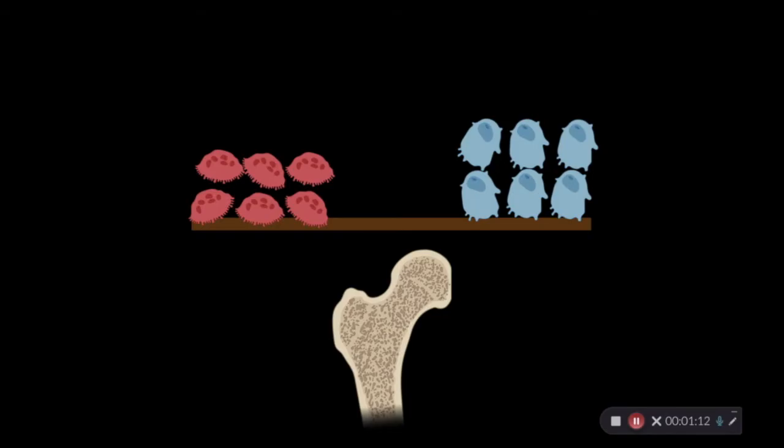Now, in healthy bone, there's a balance between bone formation and resorption, and between the activities of the osteoblasts, shown here in blue, and the osteoclasts, shown here in red. Changes in that balance do occur normally with bone remodeling and in response to changes in the body's need for calcium.